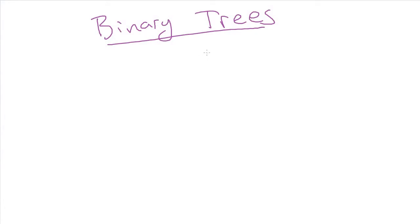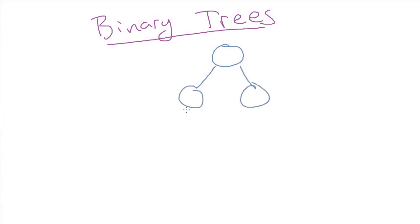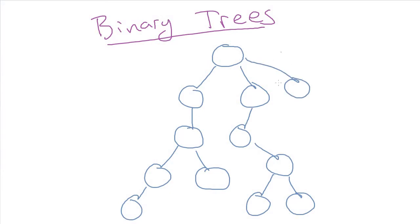Now we're going to start talking about binary trees. A binary tree is one where every node can have at most two children. The file system tree we looked at a second ago wasn't a binary tree because it had project one, project two, and project three — three children of one node. In a binary tree, each node can only have two children. The nodes don't have to have two children though; they could have just one or zero, which would be true for all of the leaf nodes. All nodes have zero, one, or two children. Having three children makes it not a binary tree.